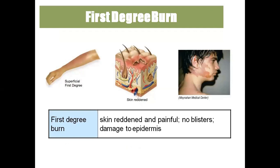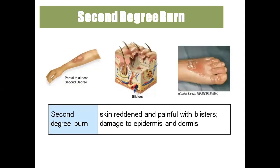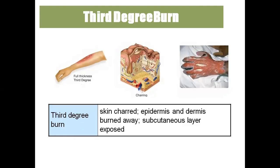First-degree burns involve damage to the epidermal cells alone — the skin becomes red and painful, with no blisters. Second-degree burns involve damage to both the epidermis and dermis — the skin becomes red, painful, and has blisters. Third-degree burns involve complete destruction of the epidermis and dermis — you can see directly the hypodermis or subcutaneous layer.